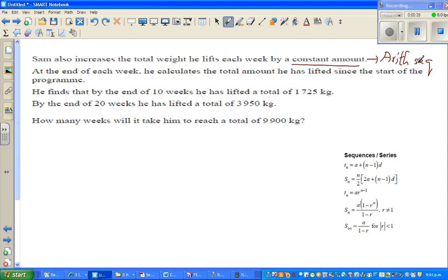Sam also increases the total weight he lifts each week by a constant amount. This phrase is an indication that this is an arithmetic sequence. At the end of each week he calculates the total amount he has lifted since the start of the program. He finds by the end of 10 weeks he has lifted 1725 kg, and by the end of 20 weeks he has lifted 3950 kg.